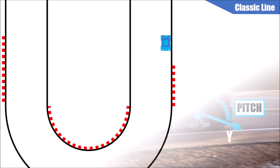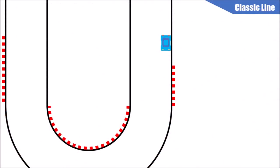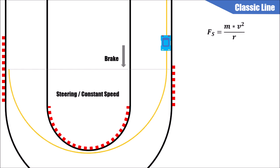Let's have a look at a 180-degree turn. There are different ways to drive through this corner, and we look at the so-called classic line first. At the classic line, we brake in a straight line. Once braking is finished, we release the brake and drive with almost constant speed and a certain steering angle through the corner with the largest possible radius.